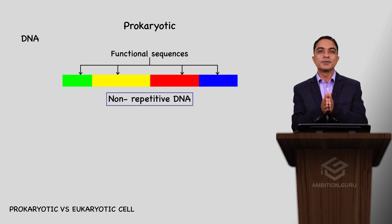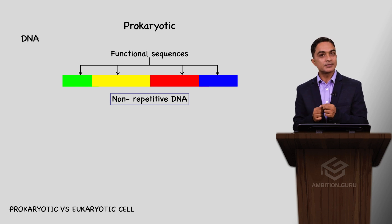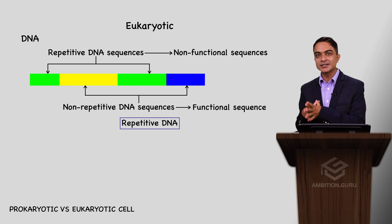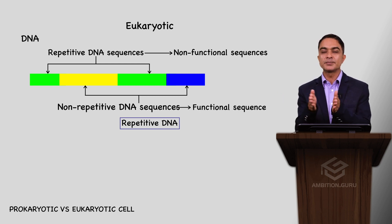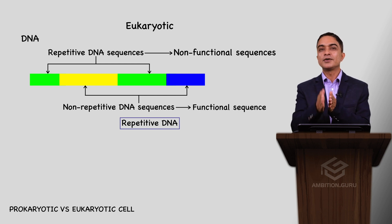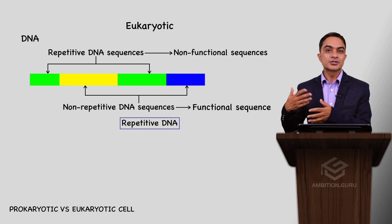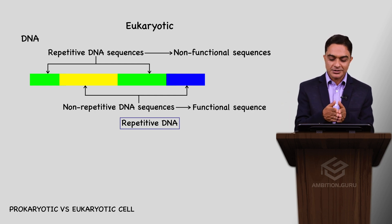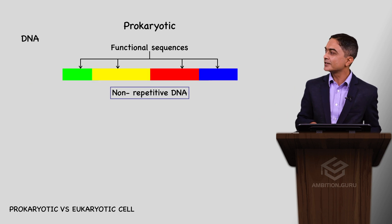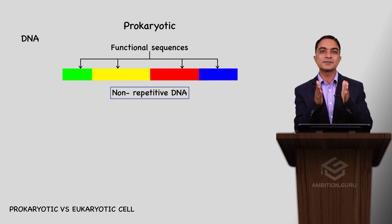An important feature: prokaryotic DNA is non-repetitive, meaning only exon functioning sequences are present. In eukaryotes, which are more advanced, both repetitive and non-repetitive DNA are present. Generally, repetitive DNA is non-functional, while non-repetitive DNA is functional. In eukaryotes both functional and non-functional DNA exist, whereas in prokaryotes only functional non-repetitive DNA is present.